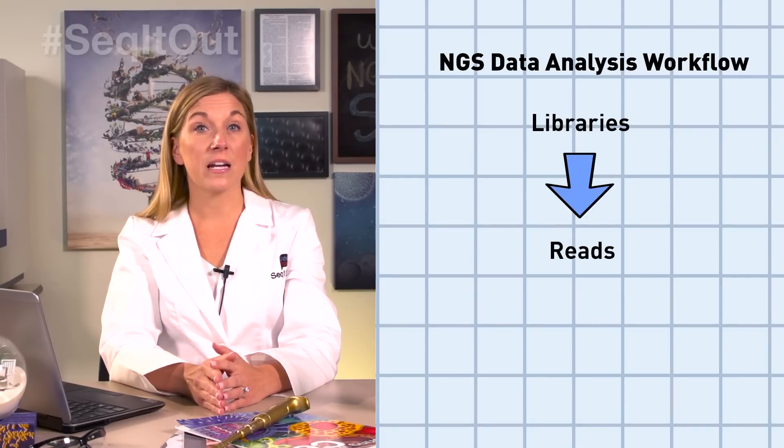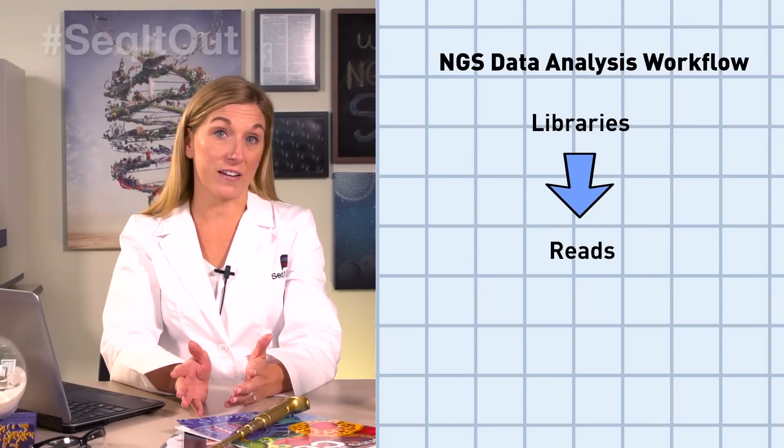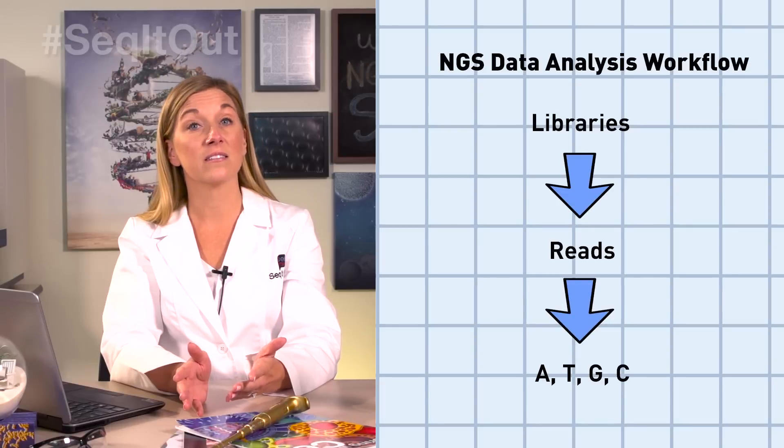The reads are presented in a manner we lab scientists all understand, like A, T, G, and C. Did you know that if you sequenced everybody's genome on Earth, you would need about 21 exabytes of space on your computer to keep their list of A, T, Gs, and Cs? That's about 21 billion gigabytes. You're definitely going to need another external hard drive for that one.